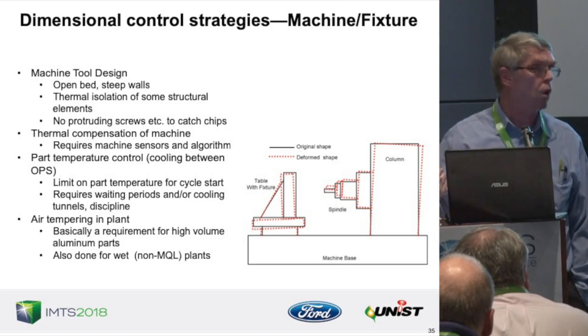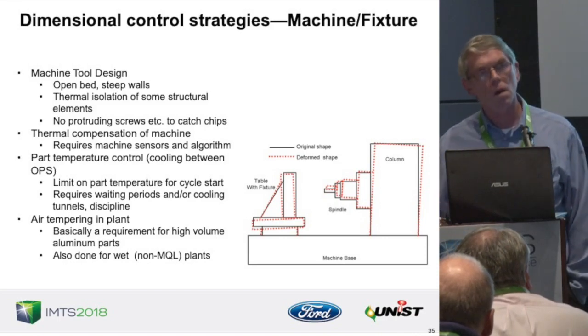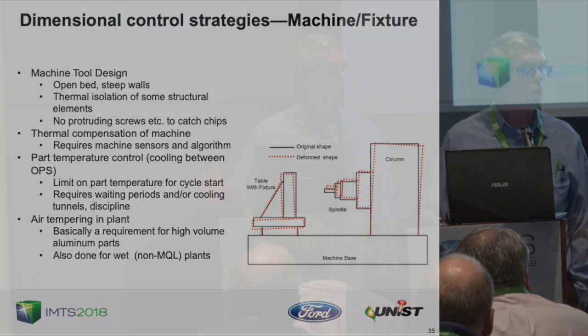Ford also air-tempers their plants, keeping temperature between 20 and 30 degrees Celsius — about 72 to 90 degrees Fahrenheit — and controlling the rate of temperature change so it doesn't change too fast. This is actually done in wet plants too, because the high-precision parts like transmission assemblies built in clean rooms require tight temperature control. A side benefit: productivity improves because workers aren't freezing or overheating.